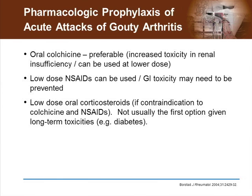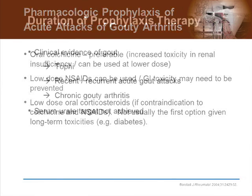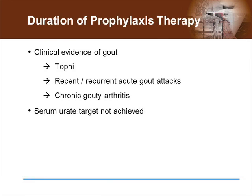Colchicine has been shown to reduce the frequency and severity of attacks and is usually the first option. The duration of prophylaxis therapy varies from patient to patient and is determined by features of persistent disease. If there is clinical evidence of gout, the therapy should be continued as the risk persists — such as the presence of tophi, recent or recurrent acute gout attacks, or evidence of chronic gouty arthritis — as an increased risk of gout attacks still exists and prophylaxis should be continued.